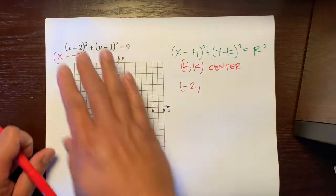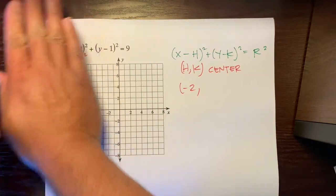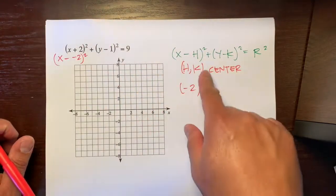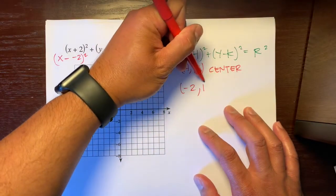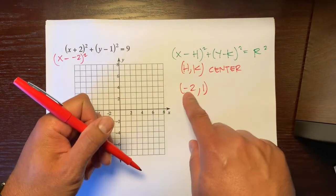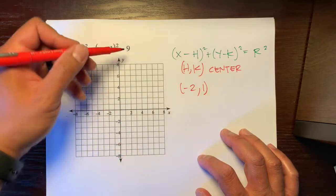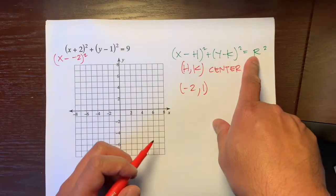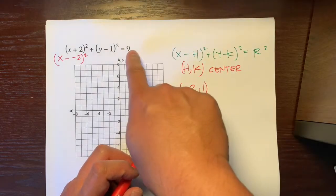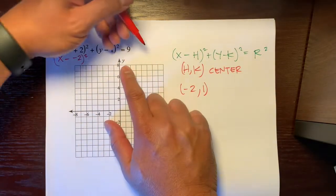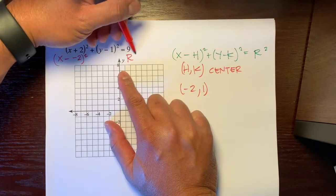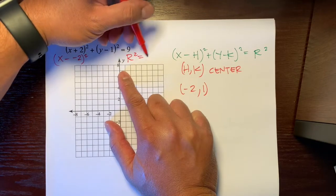And then here, remember, we just take away, we ignore the negative, and the Y value would be positive 1. So this right here, negative 2, 1, is our center. And then our radius, remember, the formula is radius squared. But we just want R. So if we did this, this 9 is equal to R squared.